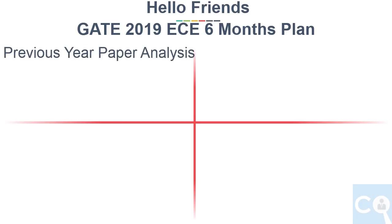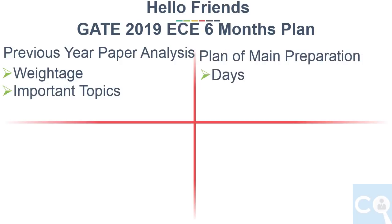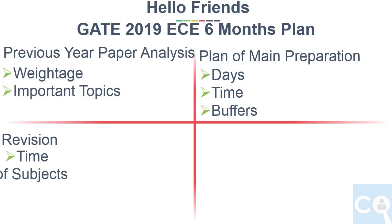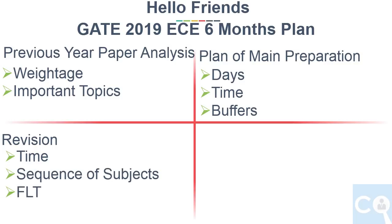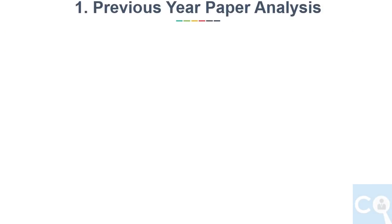Number one: previous year paper analysis, by which we will know which subject has highest weightage and how much time to give to each subject. Number two: plan of main preparation — we will see how many days to give for each subject and distribution of timings, including how to include buffers. Number three is revision — how much time to give for revision, formula for deciding the sequence of subjects in revision, and full length test. Number four is resources.